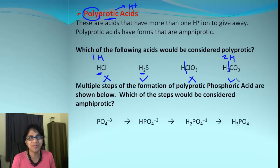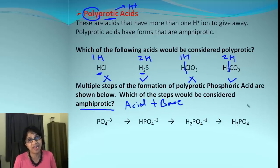Over here there are two hydrogen, so it will be a polyprotic acid. In this example below, there is conversion given from phosphate ion to phosphoric acid, and we have to find out which of the steps can be considered as amphiprotic. Amphiprotic is acid and base both. The substance should be able to donate and accept a proton.